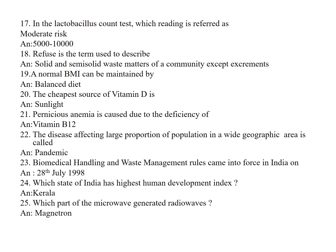A normal BMI (body mass index) can be maintained by a balanced diet. The cheapest source of Vitamin D is sunlight. Pernicious anemia is caused due to the deficiency of Vitamin B12.